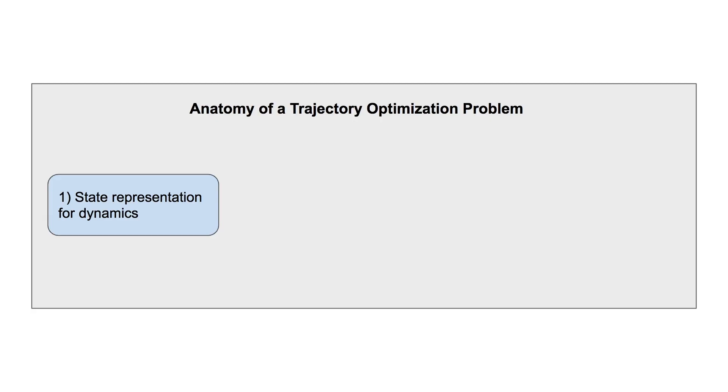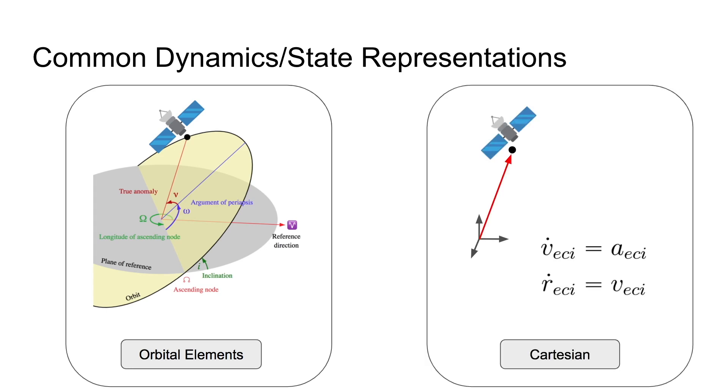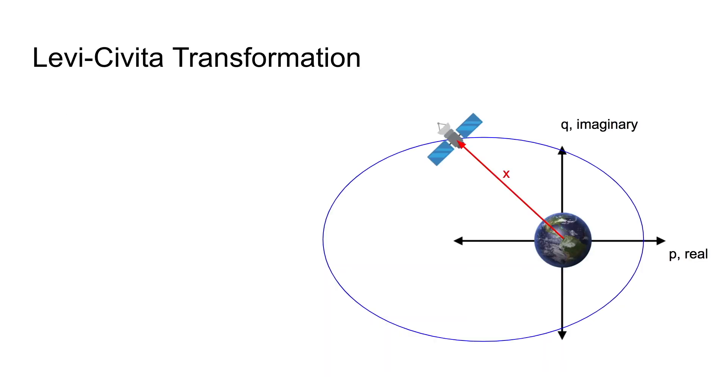The first order of business for our low thrust formulation is the chosen state representation for dynamics. Common choices for this representation are orbital elements—classical orbital elements, equinoctial orbital elements, modified equinoctial, etc.—or Cartesian position and velocity. Unfortunately, the dynamics in both of these state representations are non-linear even for the pure two-body case. They are poorly scaled, meaning elements of the state are often in varying orders of magnitude, and they are unstable for integration, meaning smaller time steps are required. Because of this, we chose to examine alternative state representations that play nicer with optimization.